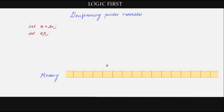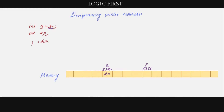Say this spot is getting allocated for the variable 'a' and the address is 5320. The value 20 will be assigned here, and for 'p' some other memory spot will be allocated — say if it is 5336. In order to make 'p' a pointer for 'a', we have to store the address of 'a' in the pointer 'p'; only then will it start pointing to 'a'. So the address of 'a', which is 5320, will now be stored inside 'p', meaning 'p' is pointing to the variable 'a'.